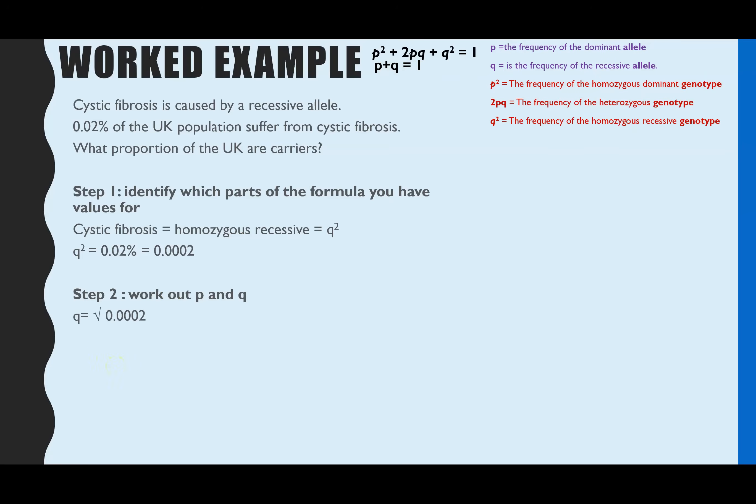To work out Q, we need to do the square root of Q squared, and that comes to 0.014. Then we use the P plus Q equals 1 formula, rearrange it to work out P, and that then means that P is 0.986. So now we have P and we have Q. We know the frequency of both alleles.